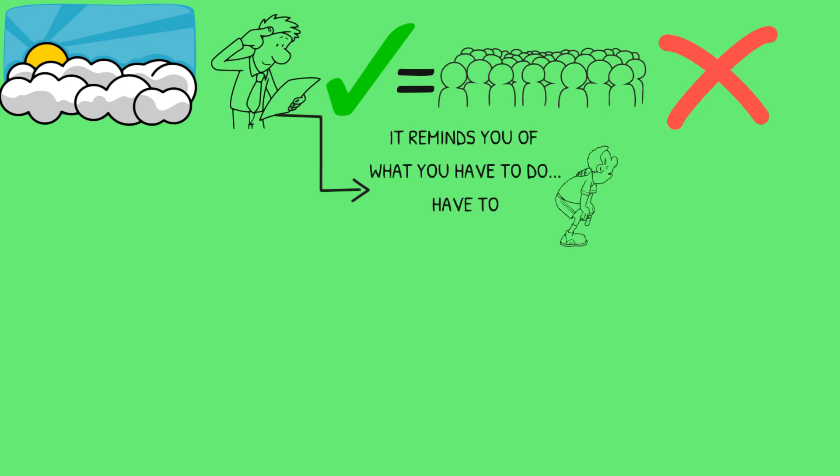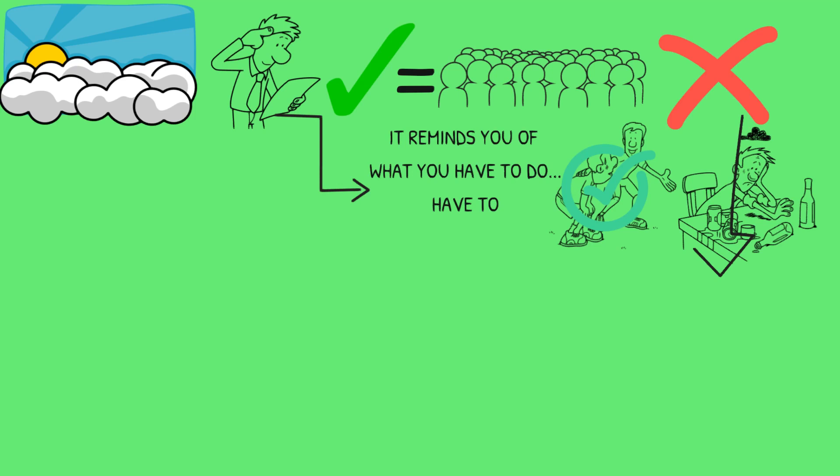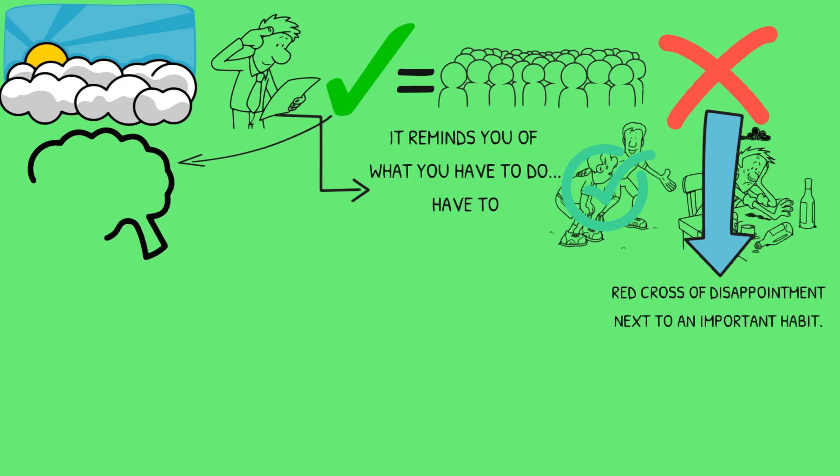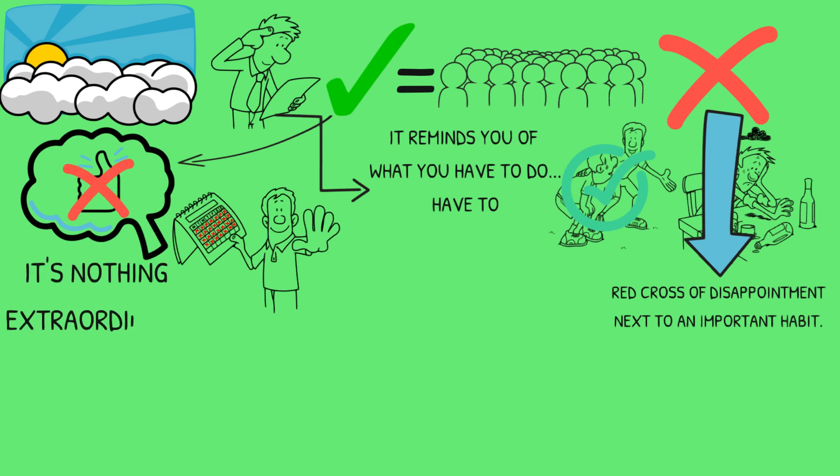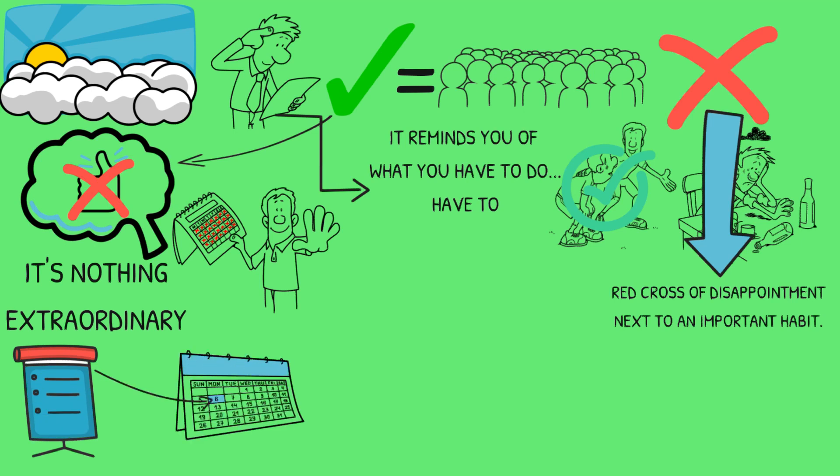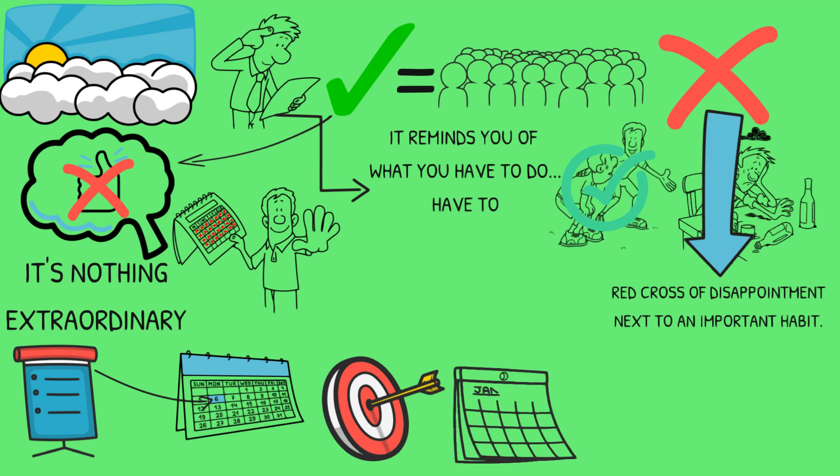This will give you a better push to get the habits completed, especially if you're not feeling yourself that day, because nobody wants to see a red cross of disappointment. By ticking it green, it's a message to the brain that you did something extra good, when in reality it's just a daily habit. It's nothing extraordinary. If you want to keep track of all the extra things you did on that day, you can. But remember, habits are like targets you need to hit every day, and that's why you'd mark them in red crosses.